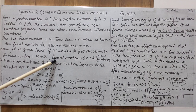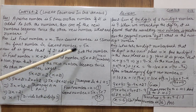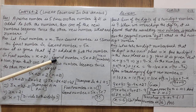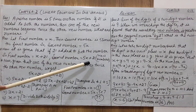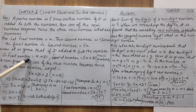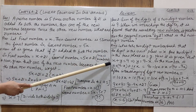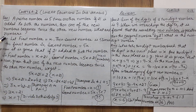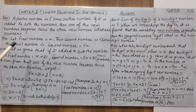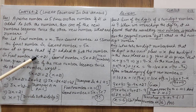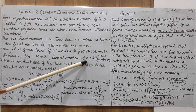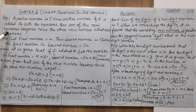Since 21 is added to both numbers, the first new number is x + 21 and the second new number is 5x + 21. According to the second condition, first new number is x + 21 and second new number is 5x + 21.